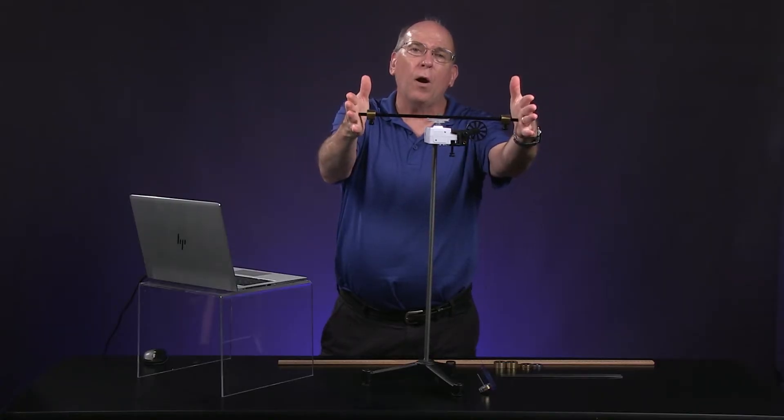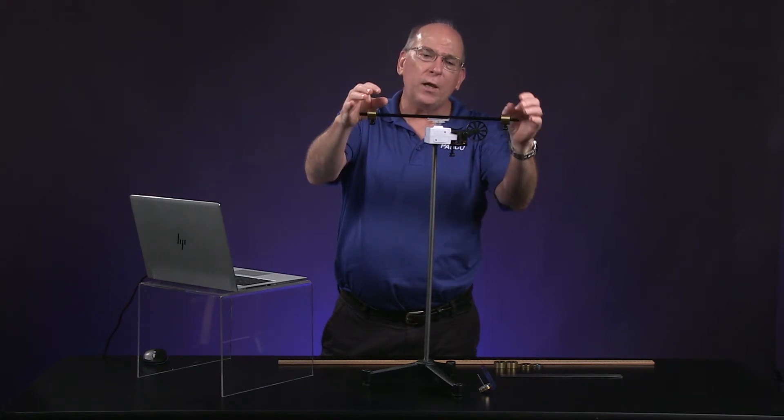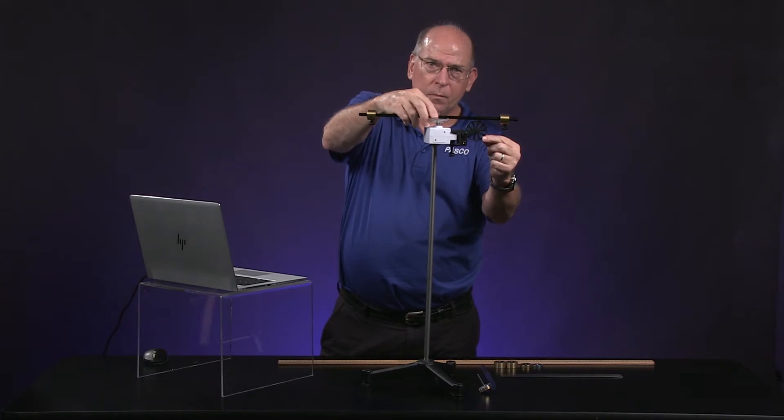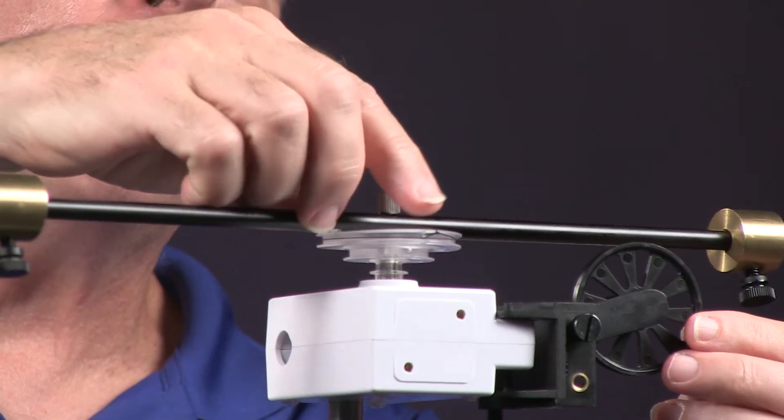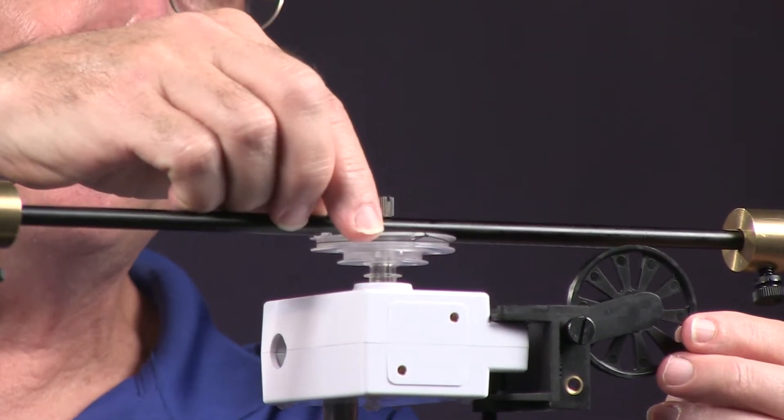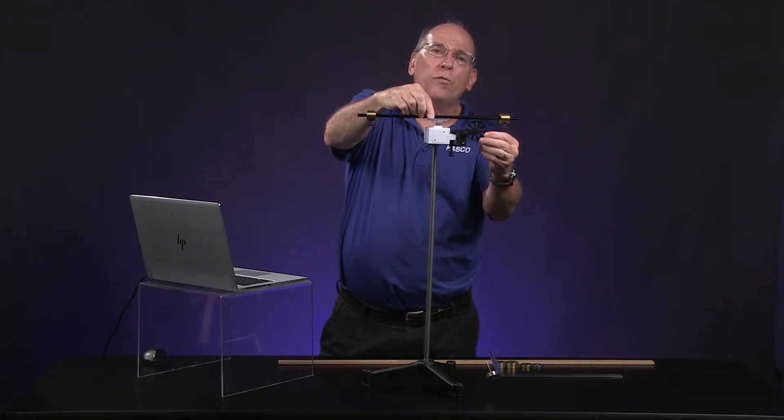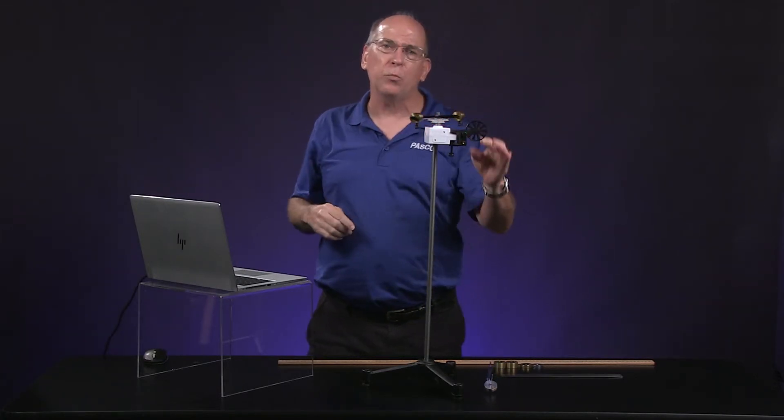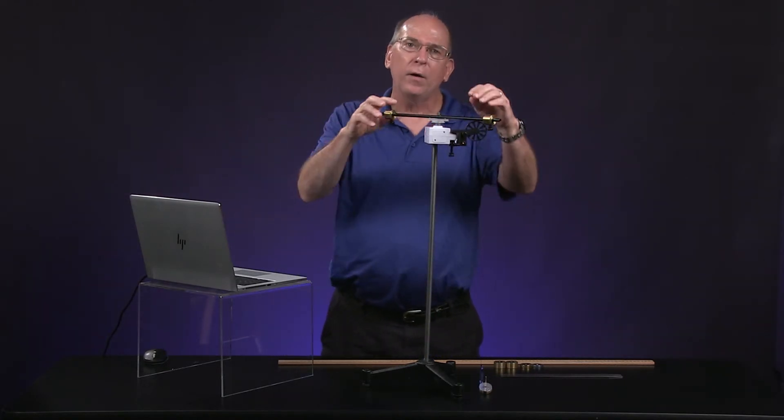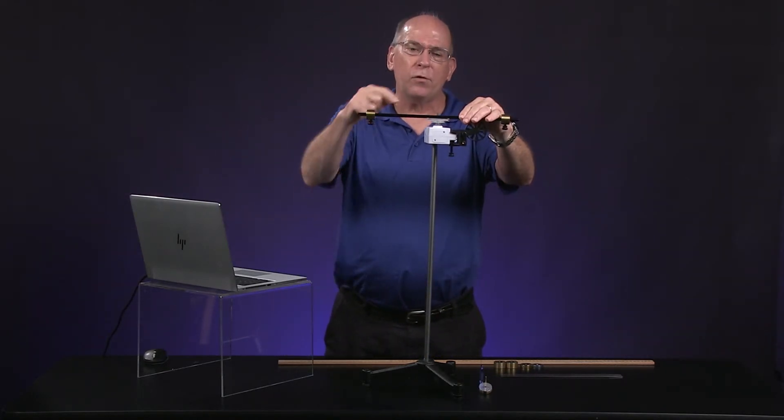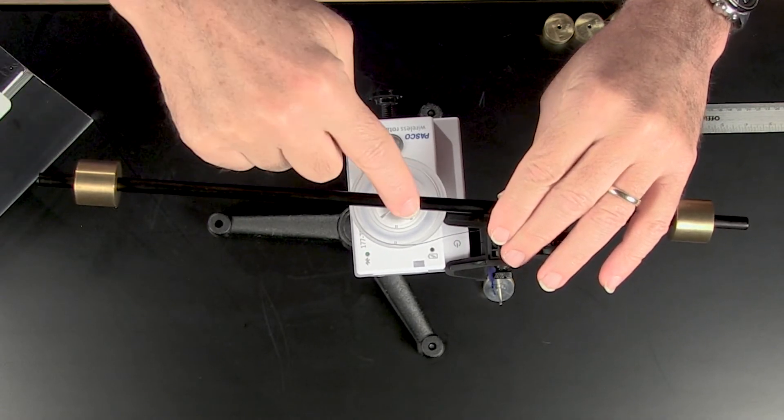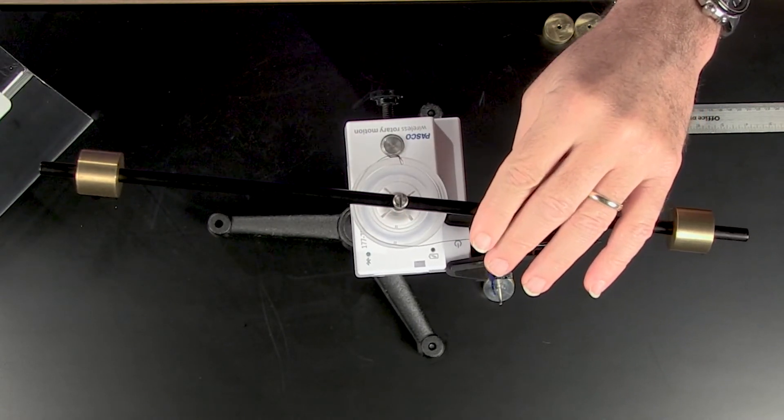Each sliding mass is 0.075 kilograms. The length of the rotating arm is 0.381 meters. The radius of the pulley, where the string is wrapped around, is 0.024 meters. There is one other measurement you will need for question 5, so you might want to write it down there. Each sliding mass is 0.16 meters from the center of the rotating arm.